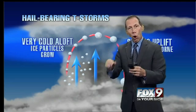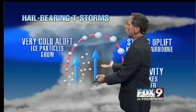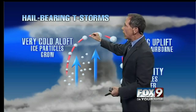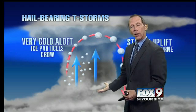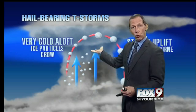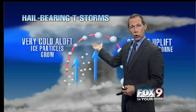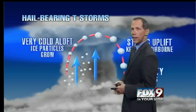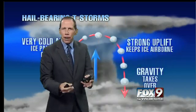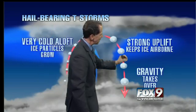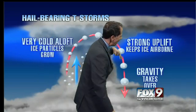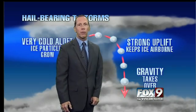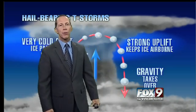The stronger the updraft, the more weight it can hold, and so the hail will get larger basically as the storm system gets stronger. Eventually the hail gets so big that the updrafts just cannot handle it and gravity takes over, and the hailstone comes down to the ground. It could be 80 degrees and ice could be falling from the sky when that happens.